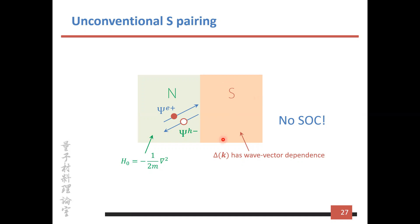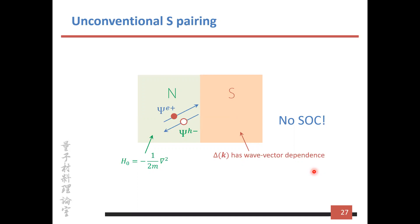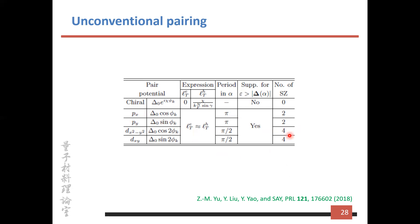The important thing for unconventional pairing is that the pair potential or gap function has a momentum dependence. We consider several kinds of pairing, including chiral-type pairing and p-wave pairing, and we find that generally there will be a shift. More importantly, for different pairings the shift manifests different features, which I will discuss in detail.